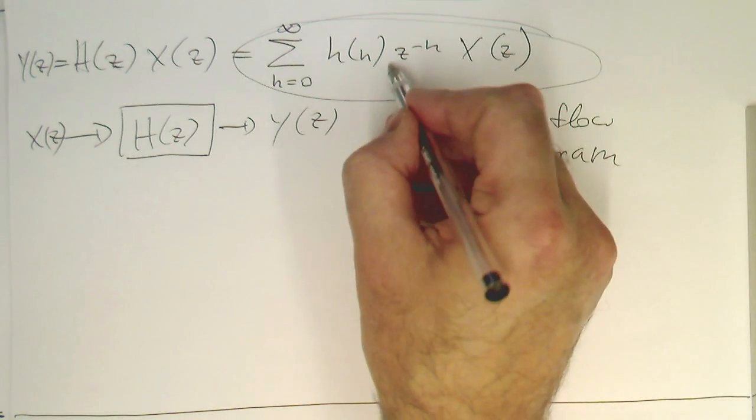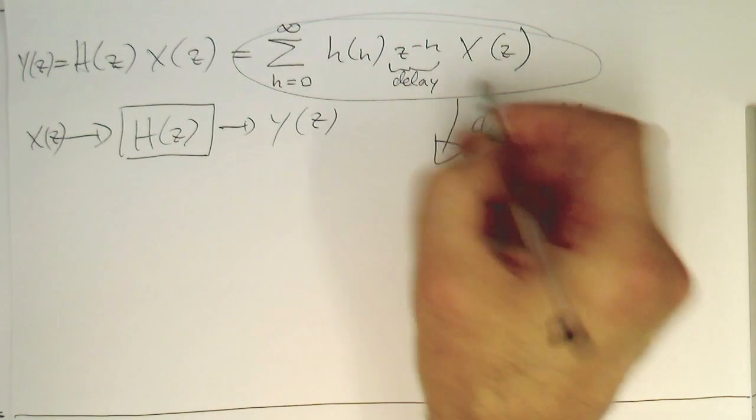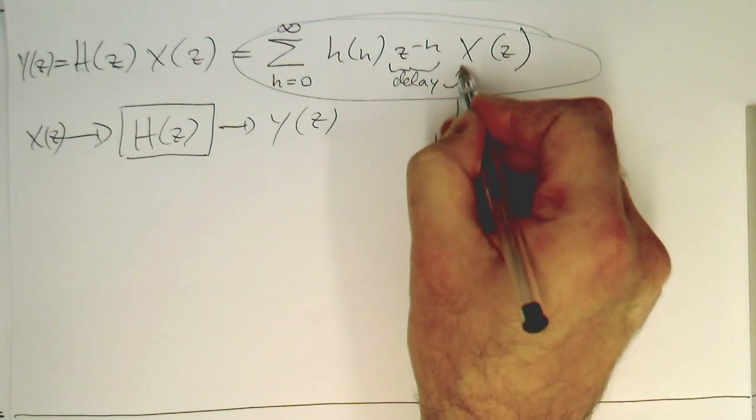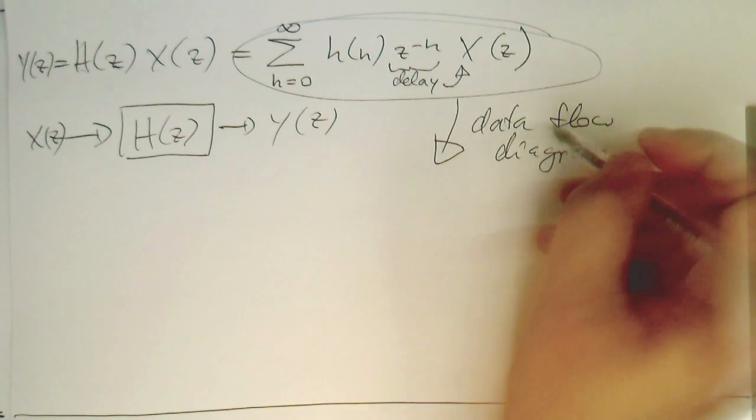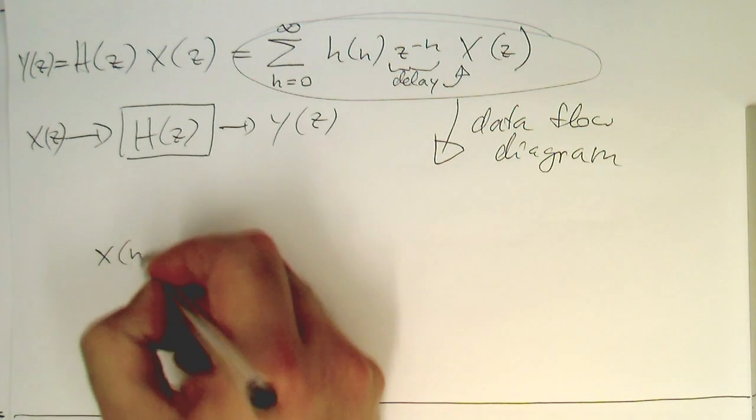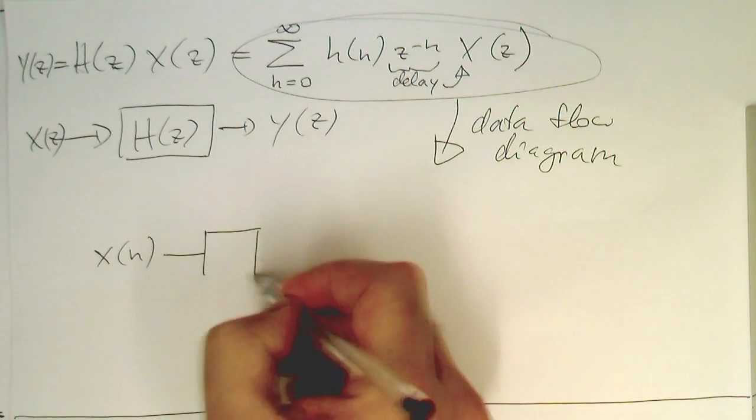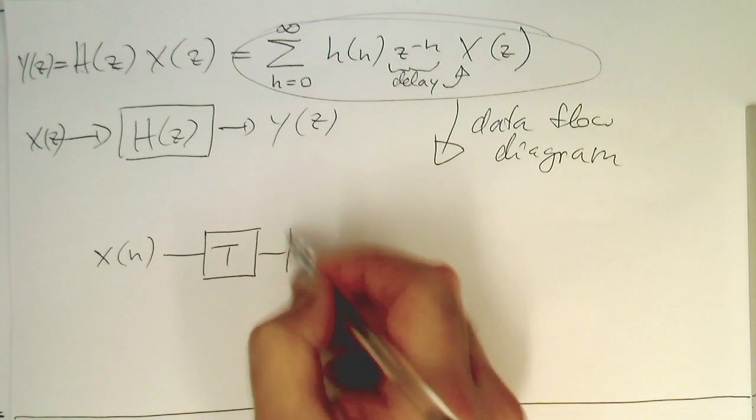Because remember here, this was a delay, and this delay acts on this X(z). In other words, if you go back to our sample domain here, then what we need to do is we need to create delay steps.